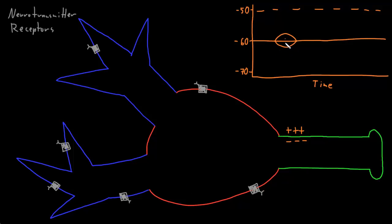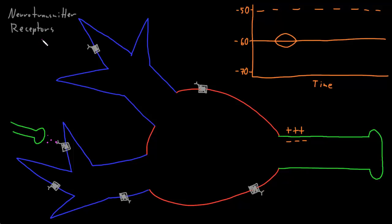To understand how these graded potentials occur, I need to introduce a new type of ion channel: neurotransmitter receptors. Neurotransmitter receptors are found at synapses, where the axon terminal of another neuron releases neurotransmitter molecules into the synapse, and they bind to these neurotransmitter receptors.